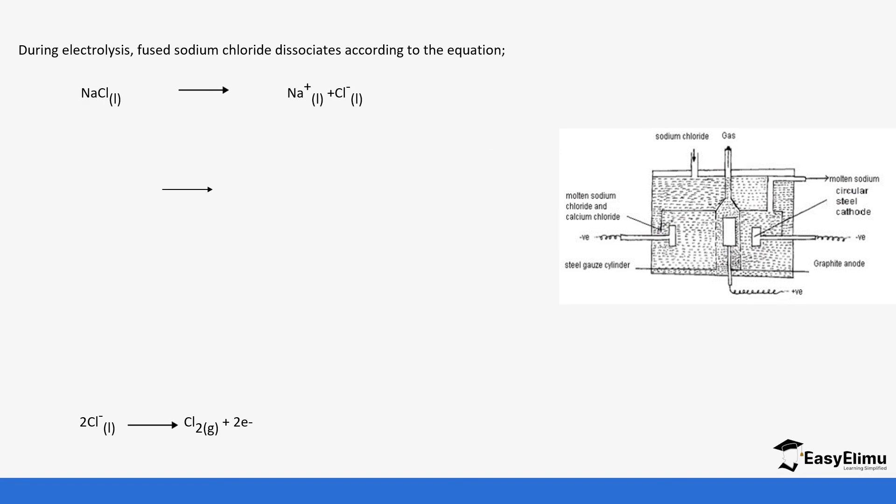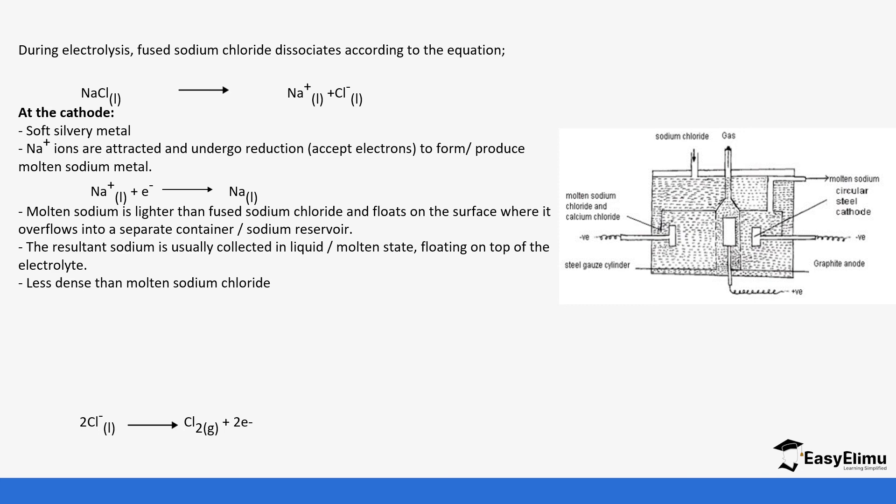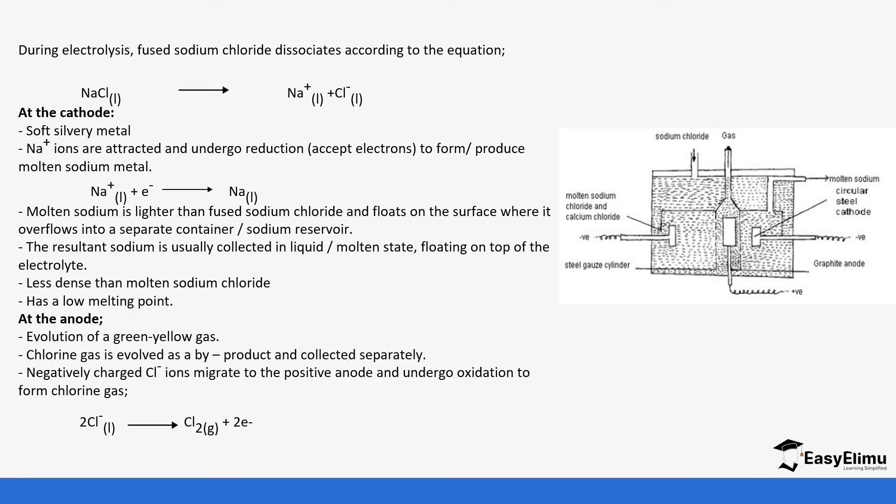Let's look at the equations that occur. During electrolysis, the sodium chloride dissociates to form sodium ions and chloride ions. At the cathode, before we go to the cathode, I always like to start with the anode. At the anode, the chloride ions are the ones that are discharged to give two electrons that travel to the cathode.